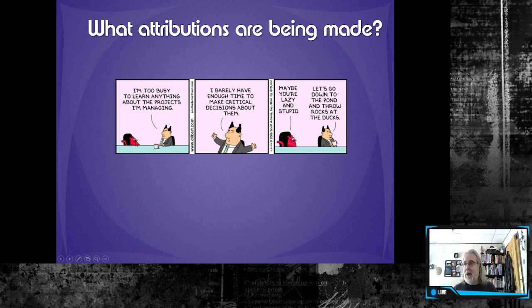Now, Catbert, who we see in the third panel, is making an internal attribution. He's saying, no, it's not about how busy you are. It's because you're lazy and stupid. That's why you don't know anything about your job. And so again, we got the same behavior, but two different attributions.